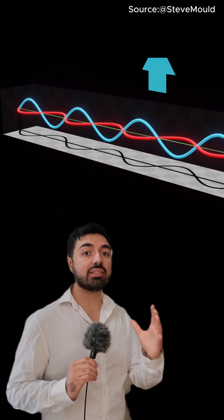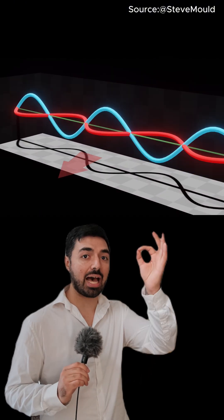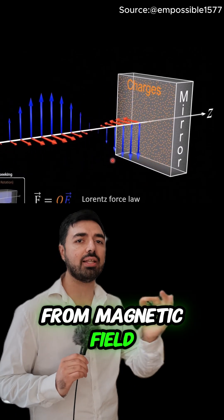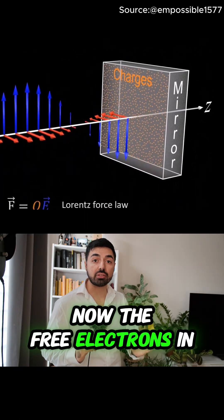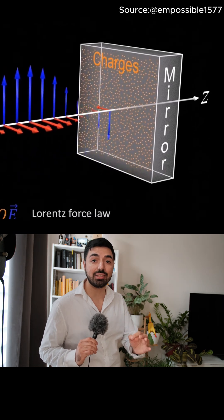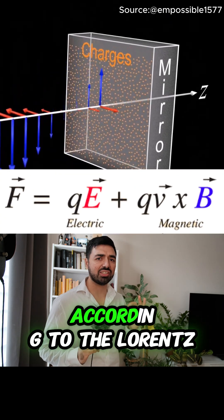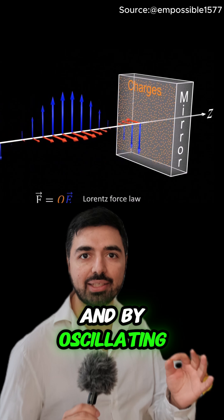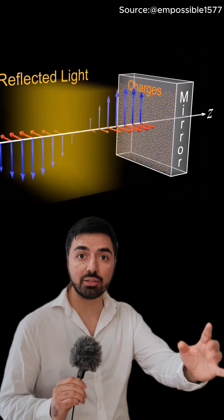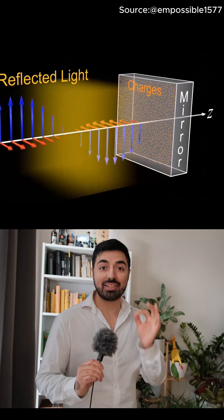If it's linearly polarized, the electric field oscillates up and down and the magnetic field left and right. The free electrons in a mirror oscillate based on the instant electric field according to the Lorentz force law, and by oscillating they re-emit the incident light which ends up in our eyes.